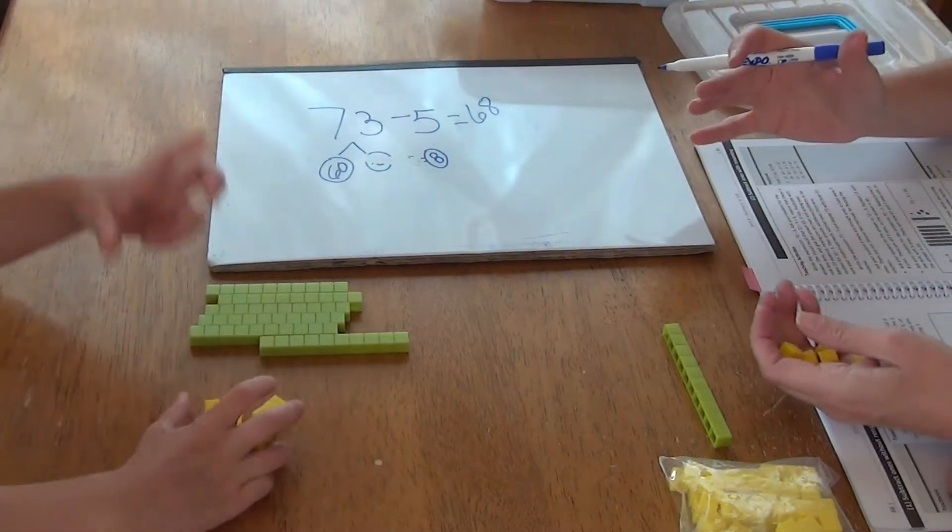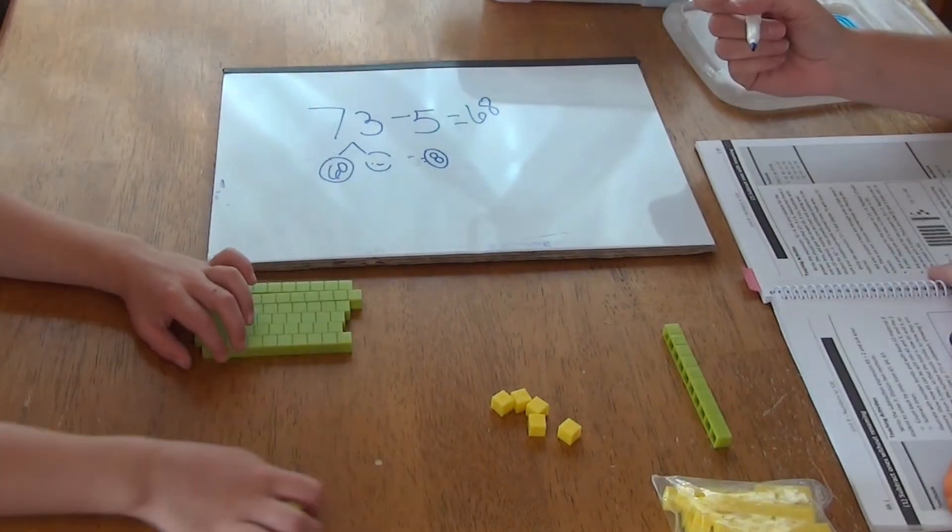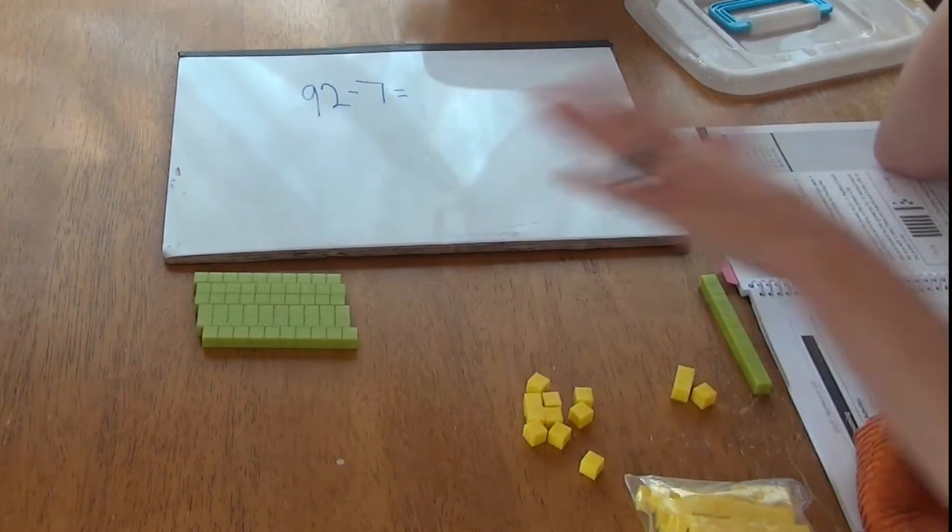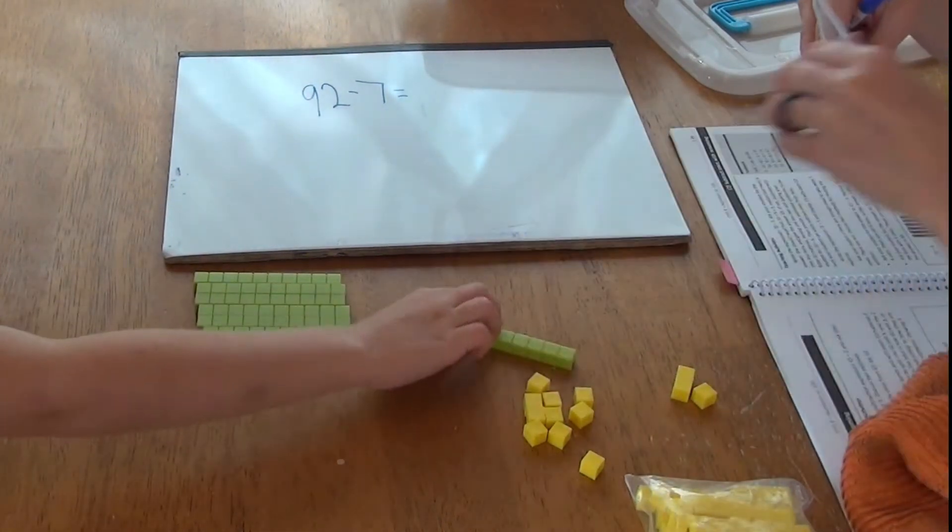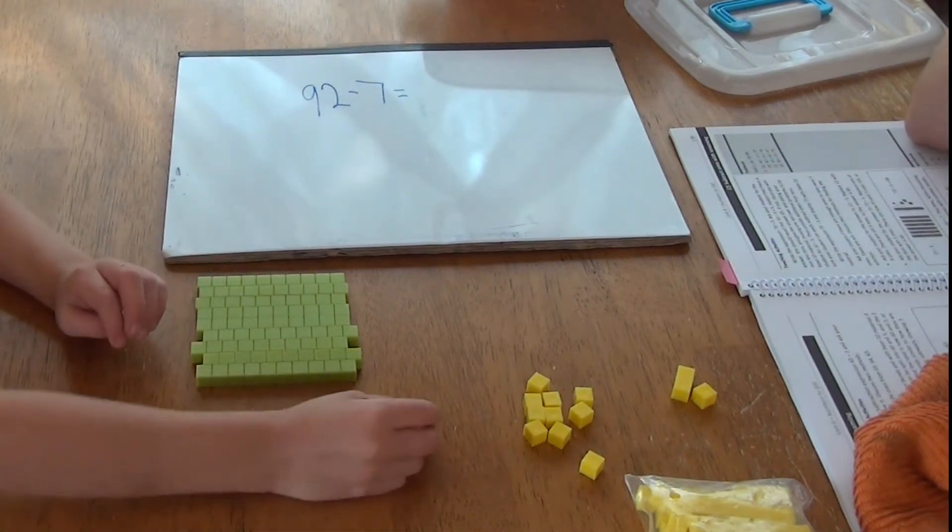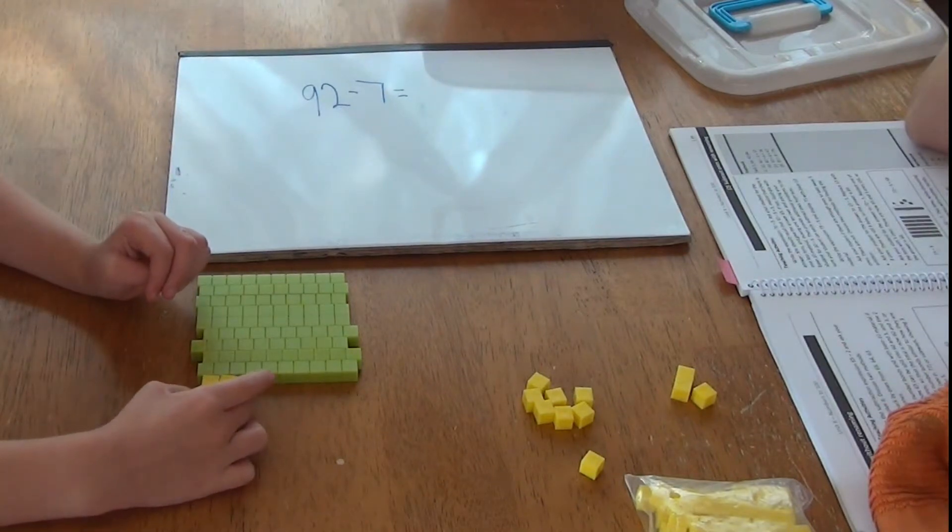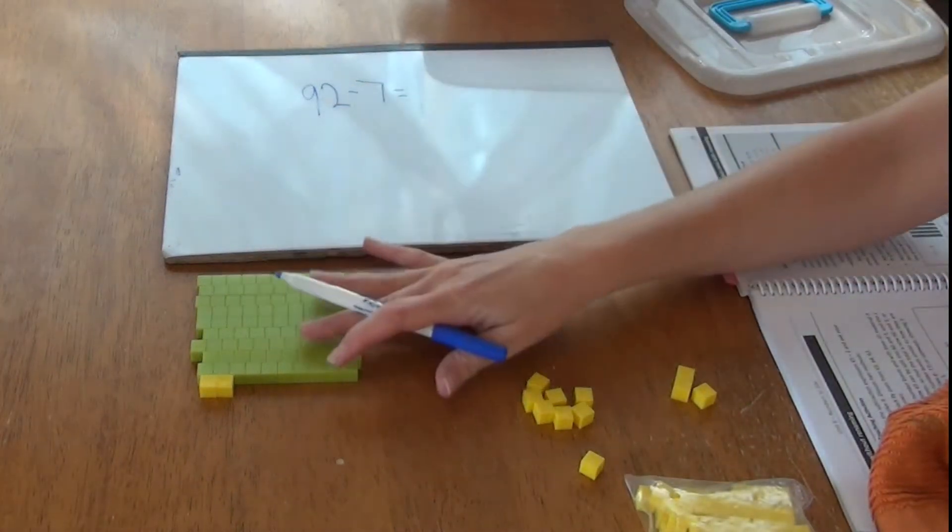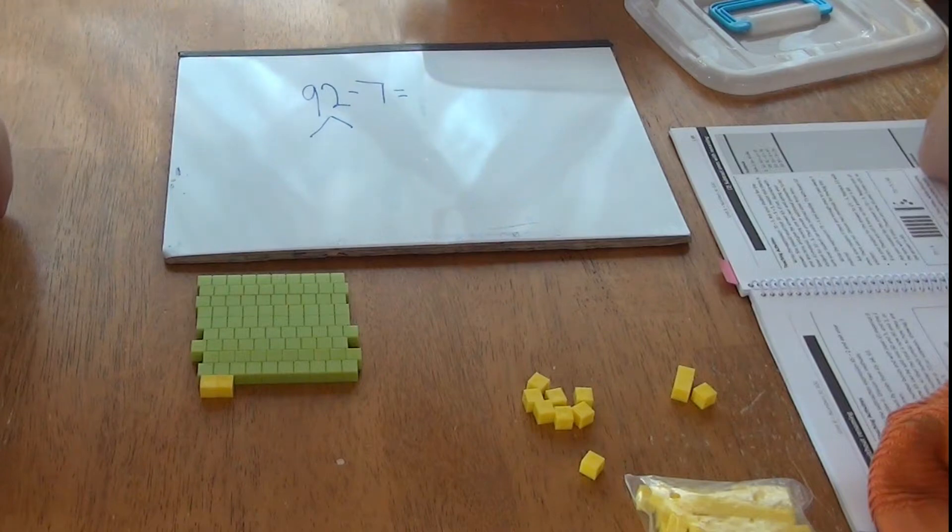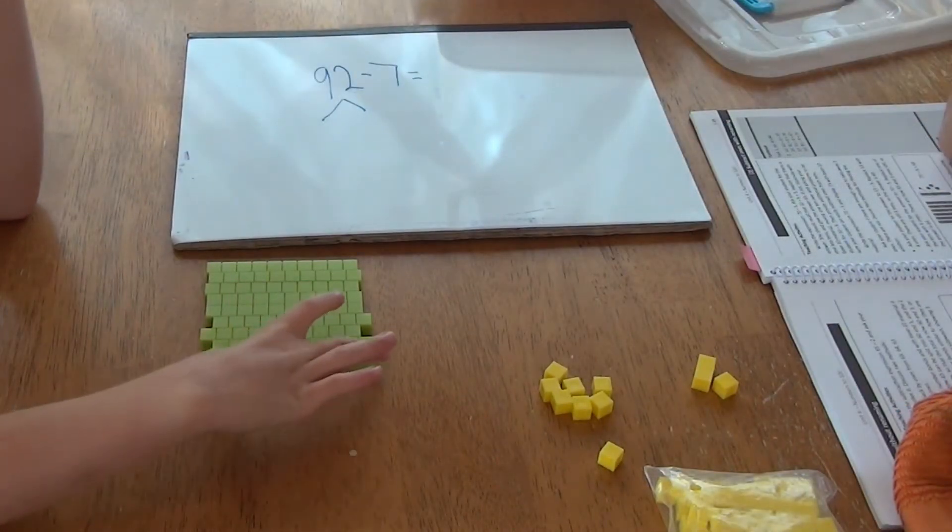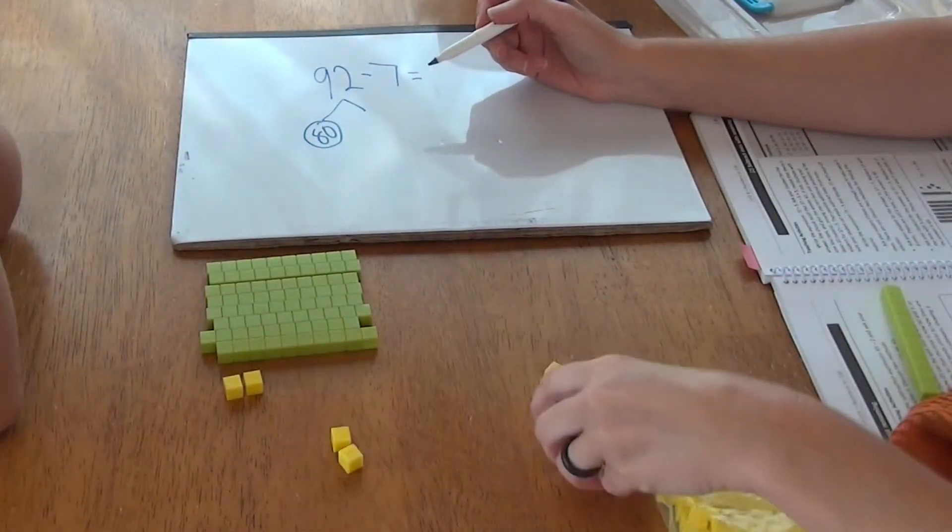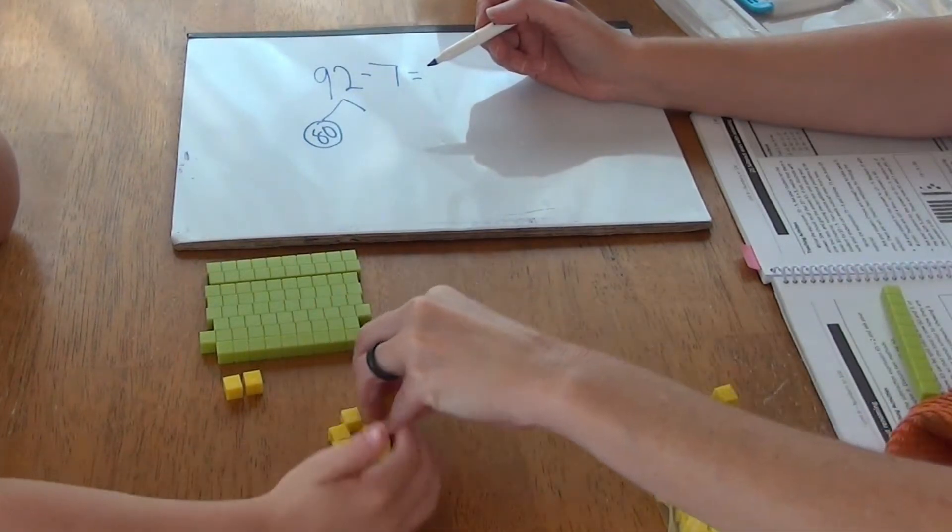All right. This time we're going to do 92 minus 7. All right. Let's make 92. You're going to need some more tens, I think, aren't you? How many tens do you need? Two. Okay. How many ones do you need? Two. Very good. So again, we're going to do it with the number bonds. Can we take 7 away from this 2? No. No. So what are we going to need to do? We're going to unmelt one of my tens. Okay. So we're going to make this. We have eight tens now, right? So give me this one. And then you're going to have two, four, six, eight, ten.